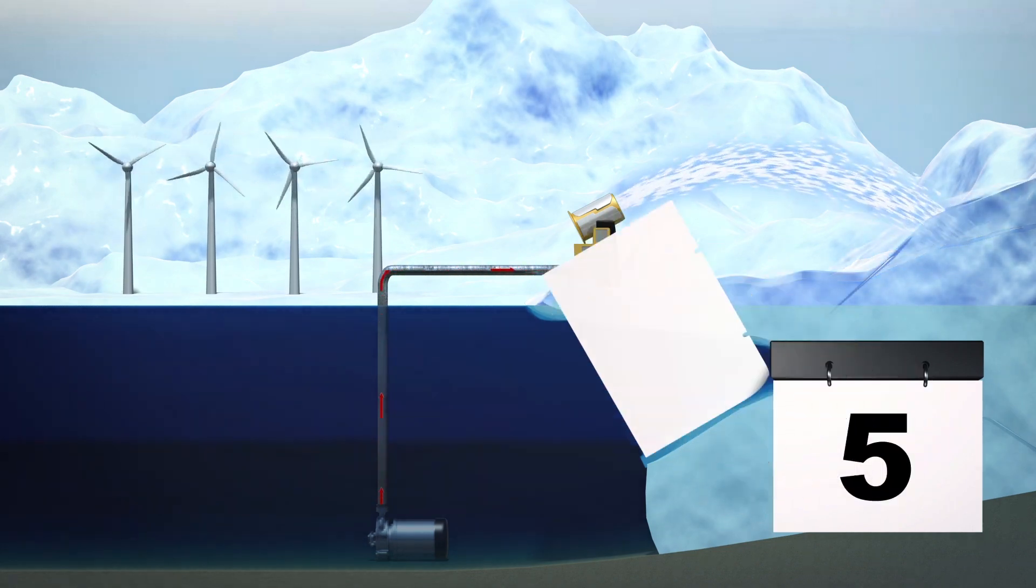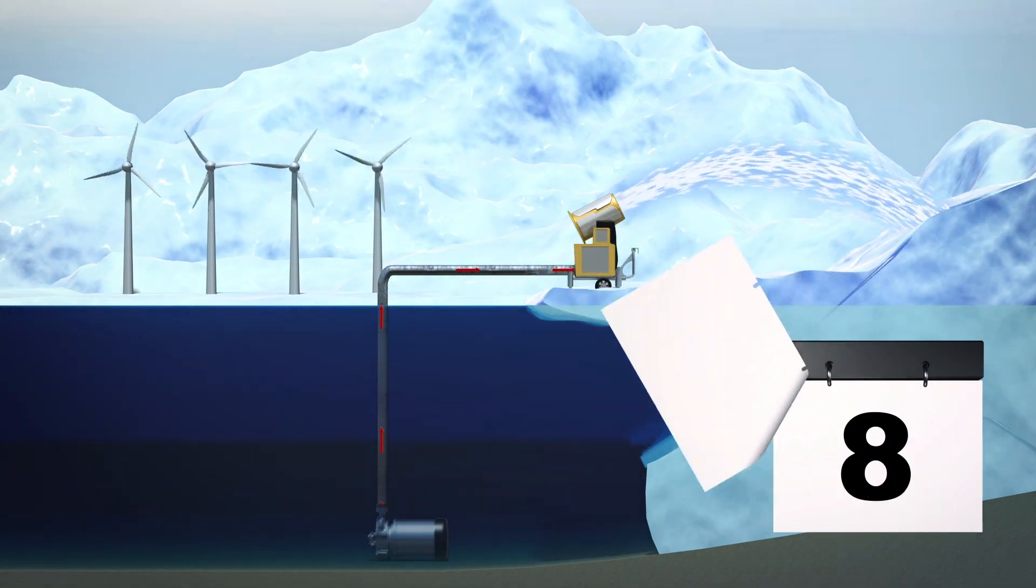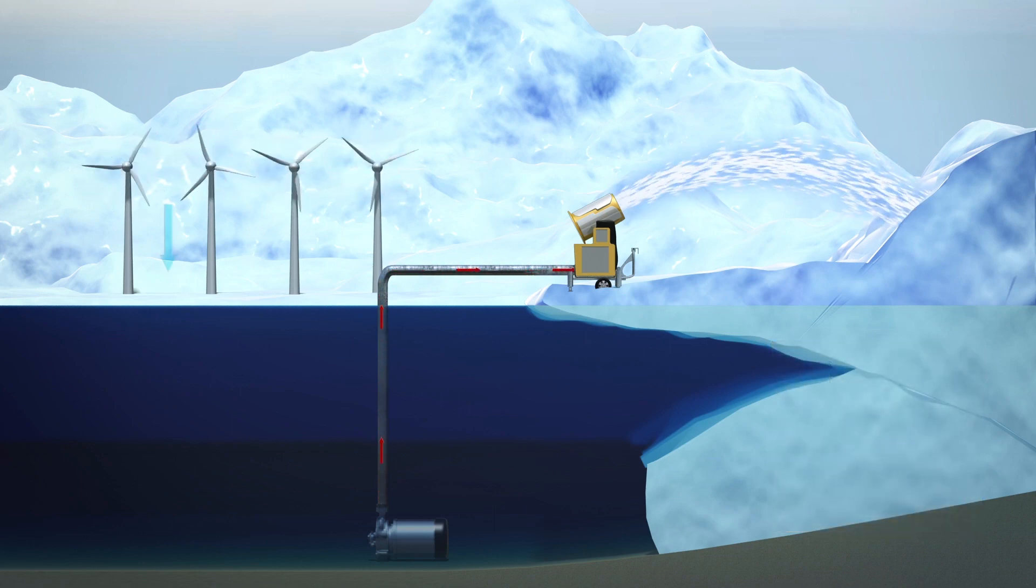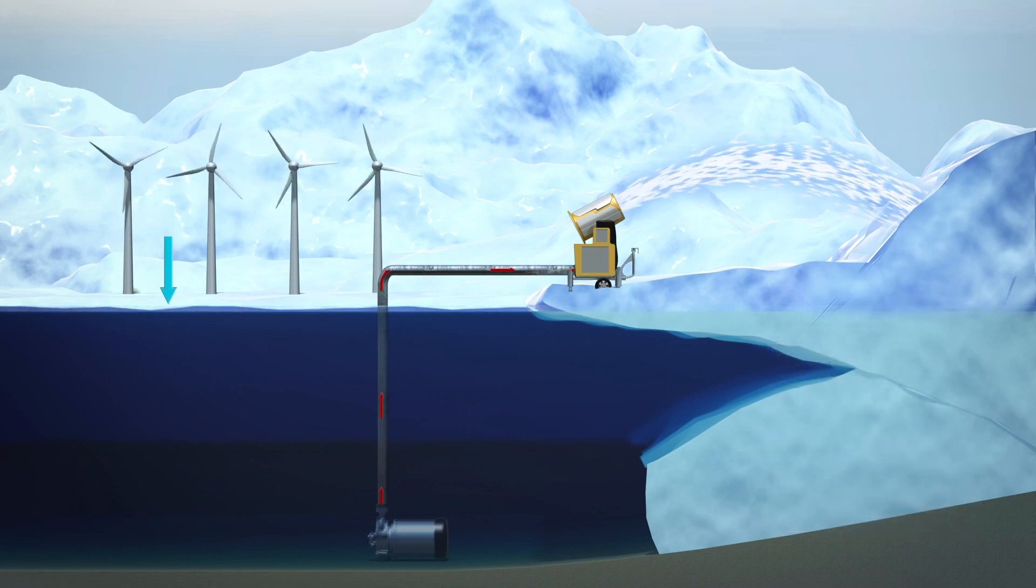According to study co-author Anders Leverman, it would take 7.4 trillion tons of snow over a 10-year period to result in a two-centimeter drop in sea level, though the artificial snow would weigh the glaciers down and improve stability.